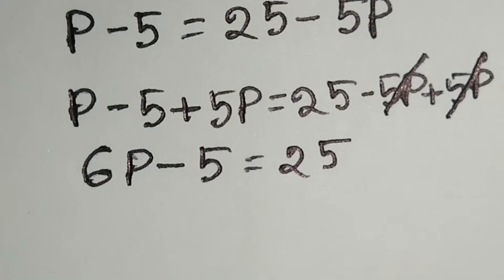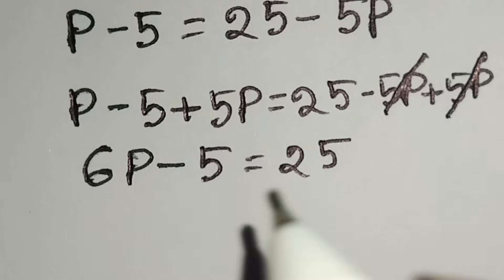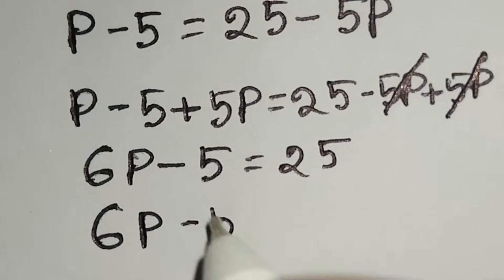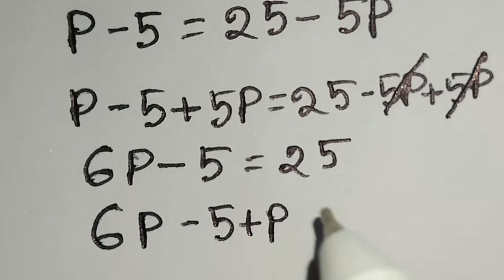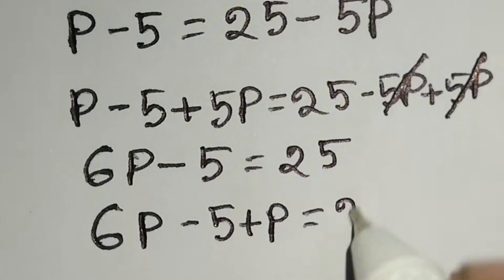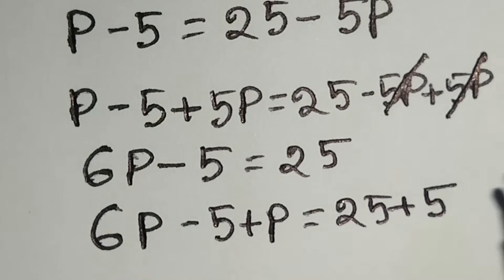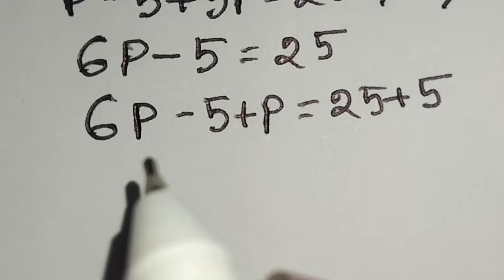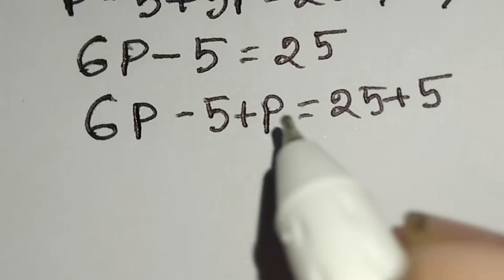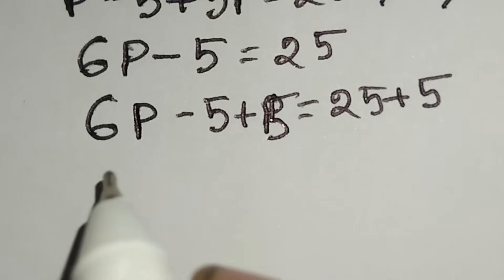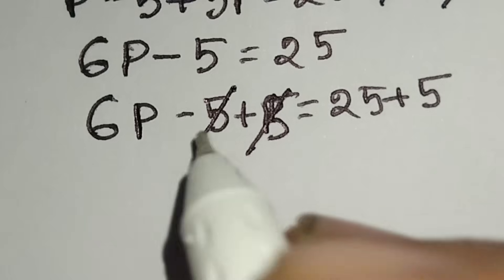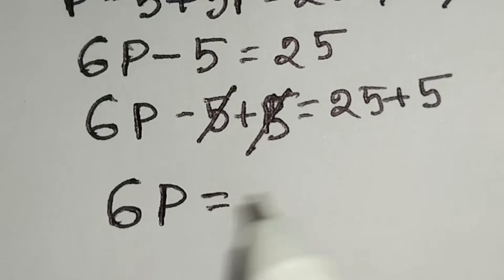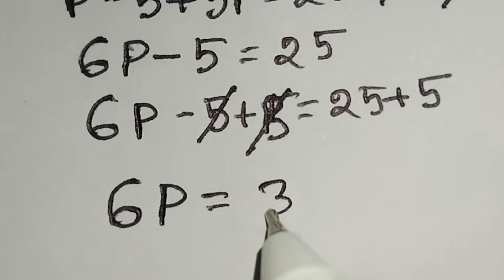Now we'll add 5 to both sides, so we can write 6p minus 5 plus 5 is equal to 25 plus 5. The positive 5 and negative 5 cancel, giving us 6p is equal to 25 plus 5, which is 30.